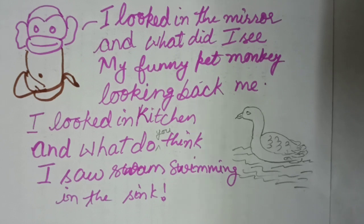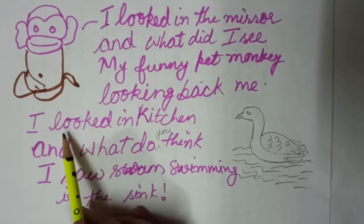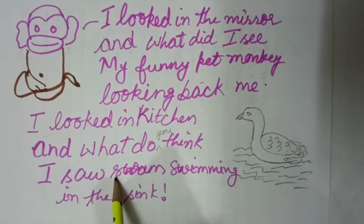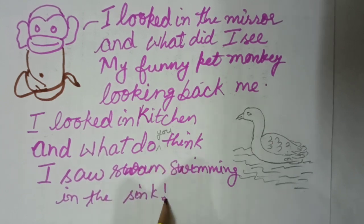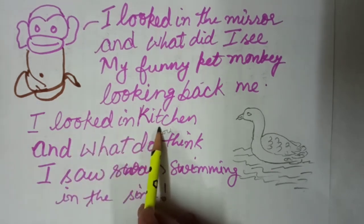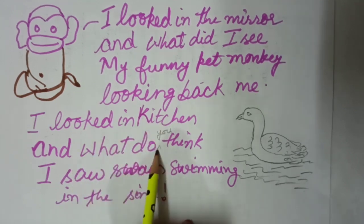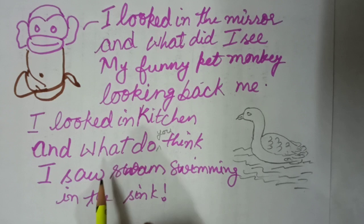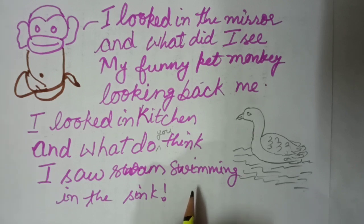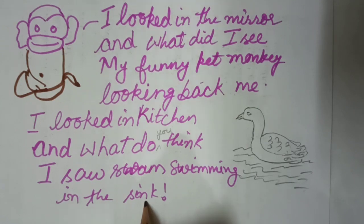Now we will proceed to the second stanza. 'I looked in the kitchen and what do you think? I saw my swan swimming in the kitchen sink.' So I looked in the kitchen, and what do you think — what did I see? I saw my swan swimming in the kitchen sink. The second pet is swan.